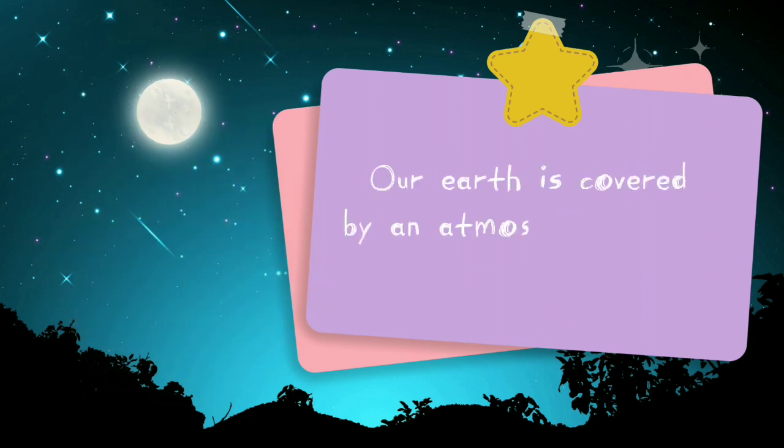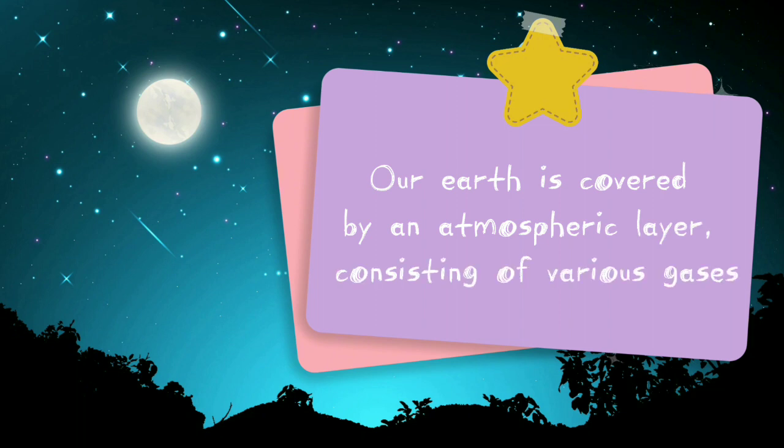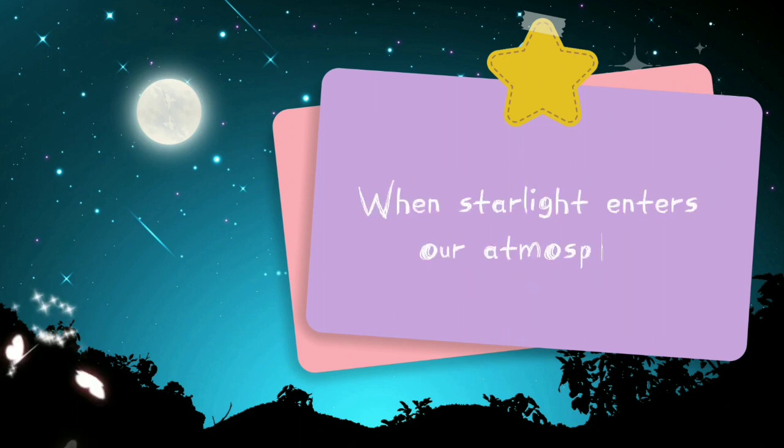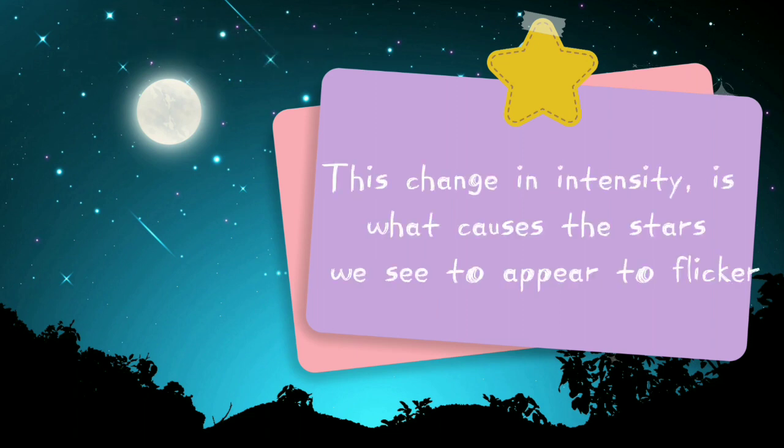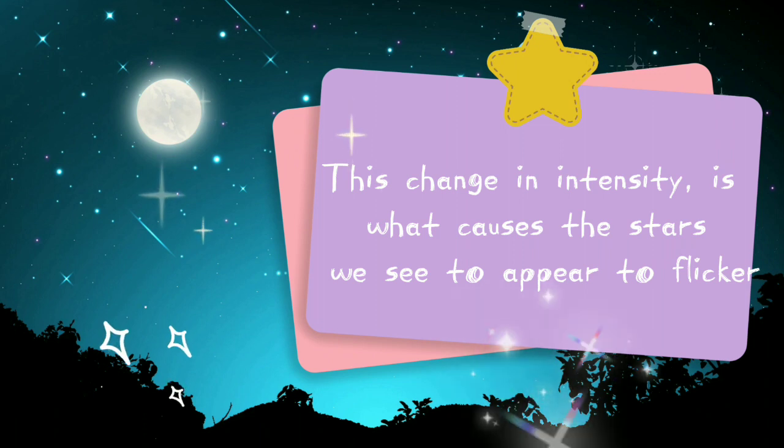Our Earth is covered by an atmospheric layer consisting of various gases. When starlight enters our atmosphere, the air refracts the light at different speeds depending on its density. This change in intensity is what causes the stars we see to appear to flicker.